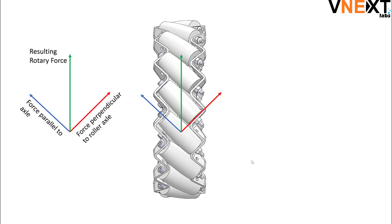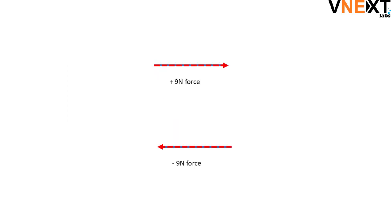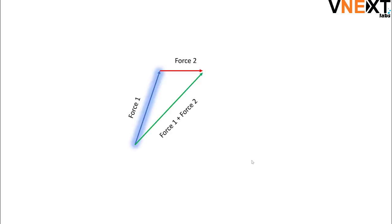Let's quickly walk through some fundamentals of vector properties of force. We all know that force is a vector — that is, it has quantity and direction. When different forces are combined, the resultant force has its own quantity and direction. As you can see, force one is added to force two, and the resultant force has its own quantity and direction.